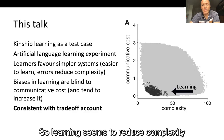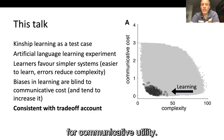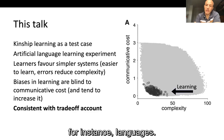Learning seems to reduce complexity but be relatively blind to the consequences for communicative utility, which means something else must be enforcing the requirement for low communicative cost — for instance, language use.